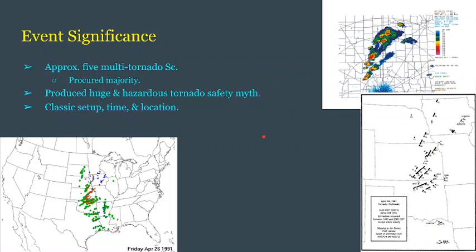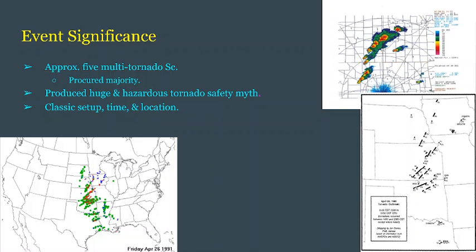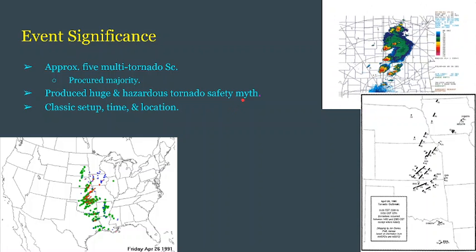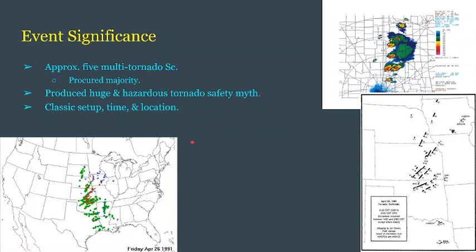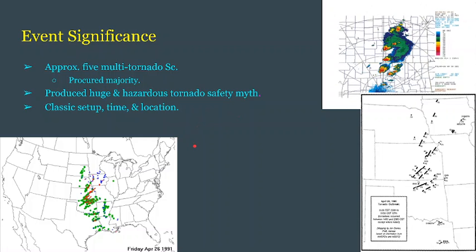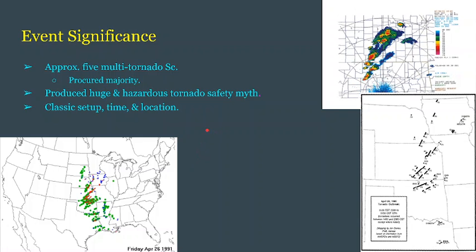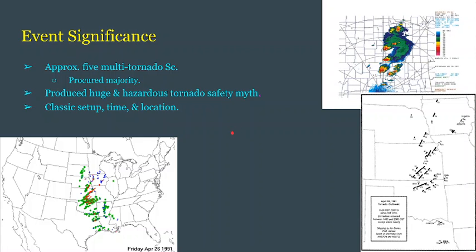The significance of this outbreak mainly comes from the star of the show, the Andover F5. Otherwise, this was a classic setup at a classic time in a classic location — a classic cold front dry line event dead in the heart of Tornado Alley in April. This is a perfectly average outbreak almost, except for the fact that the Andover F5 created a huge and hazardous tornado safety myth: that you can survive a tornado by hiding under a highway overpass.